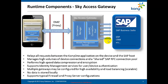The Access Gateway is responsible for high-speed data compression and encryption. It supports identity management services to authenticate user-device combinations. You may deploy multiple Access Gateways for high availability, load balancing, and performance using different network subnets — so it's totally scalable across the middle. No data is stored locally, so it should not ever be confused as a middleware server.